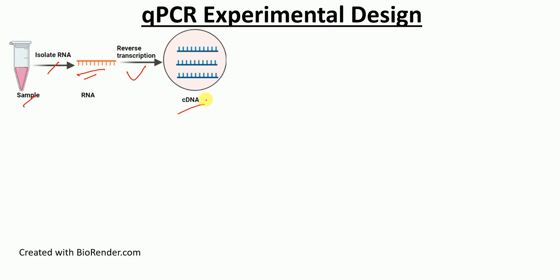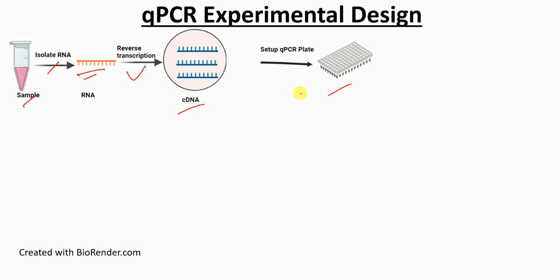After you have made the cDNA, you have to set up the QPCR plate. To set up the QPCR plate, you have to prepare the master mix. You will use primers that are specific for your gene of interest, and also primers specific for the reference gene.